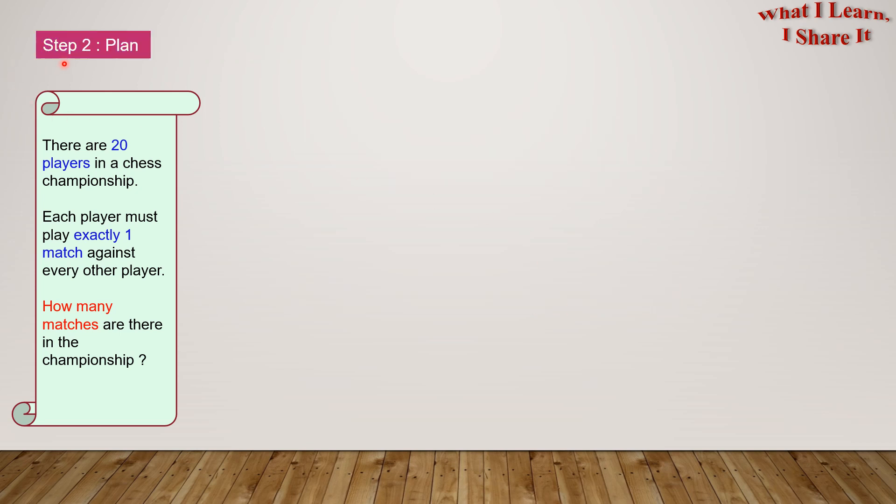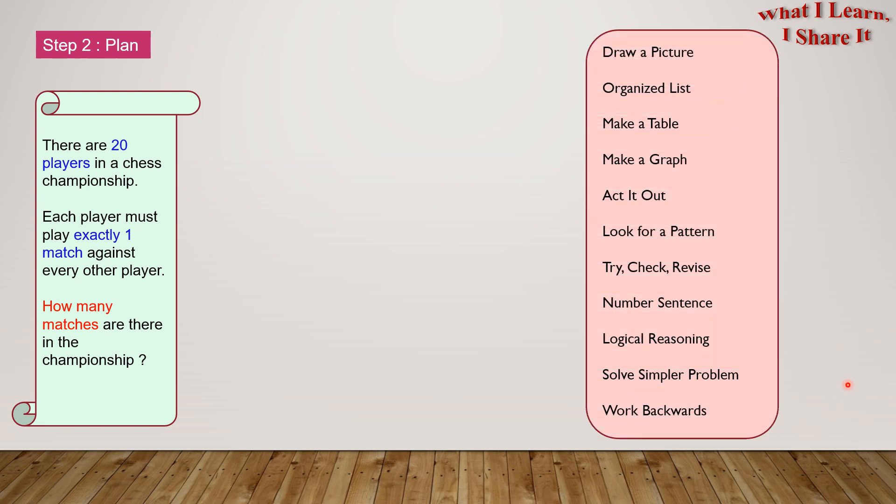Step 2: Plan. Now let's think about the strategies. Here are all the strategies: draw a picture, organize list, make a table, make a graph, act it out, look for a pattern, try check revise, number sentence, logical reasoning, solve a simpler problem, and work backwards. I'm going to use organized list, solve a simpler problem, and look for a pattern.